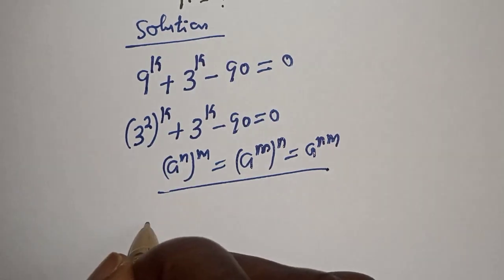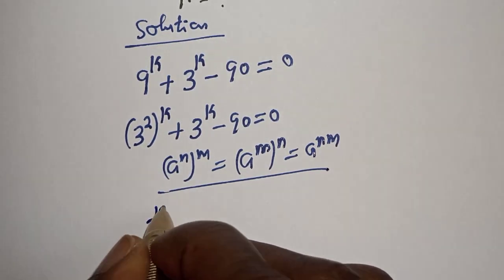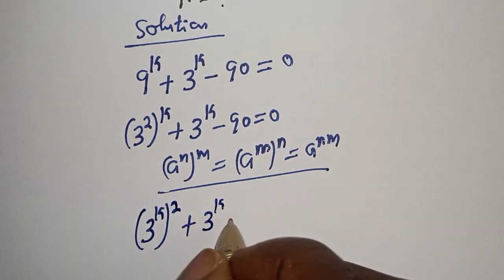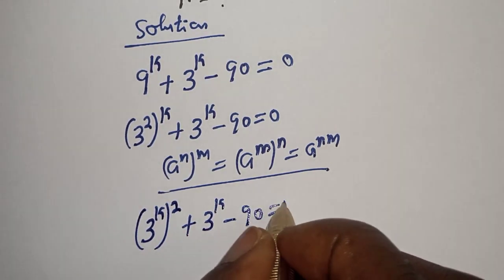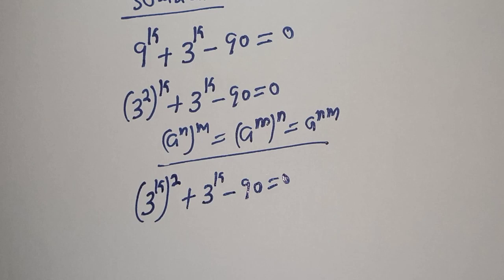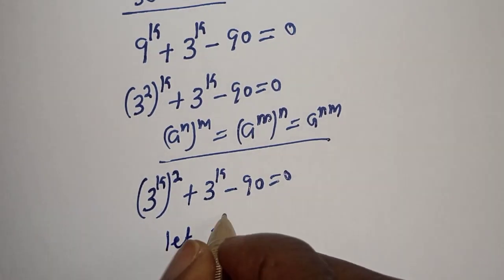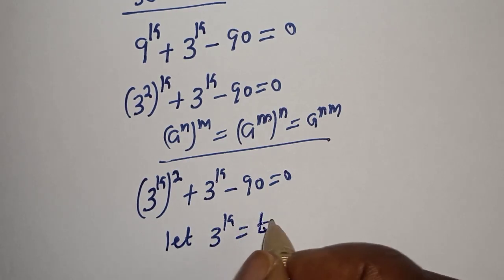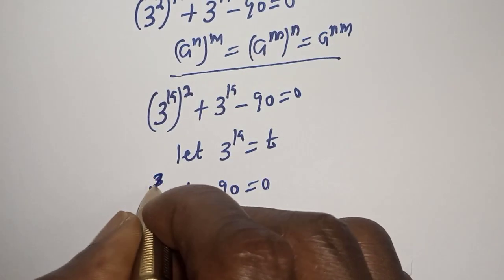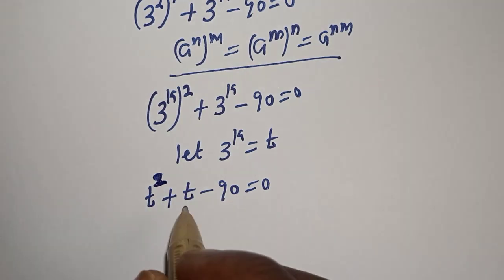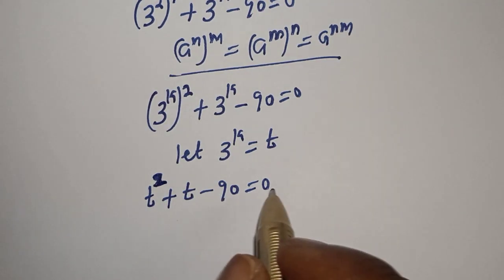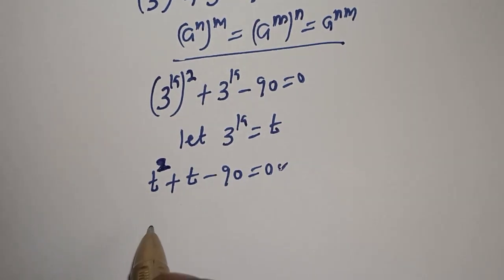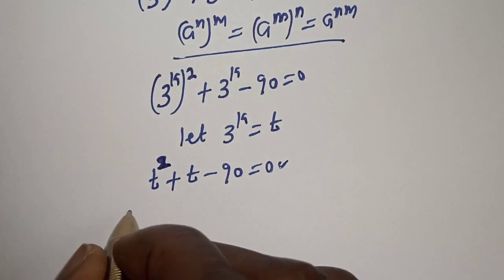This can be written as t raised to the power k squared plus t raised to the power k minus 90 is equal to 0. Let t equal 3 raised to the power k. This is a quadratic equation.